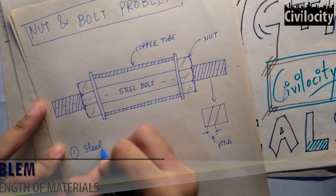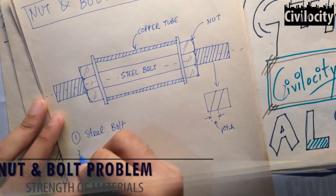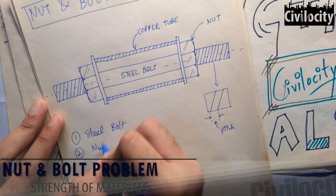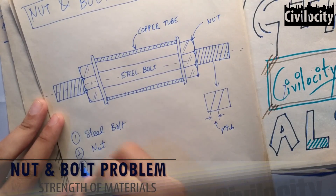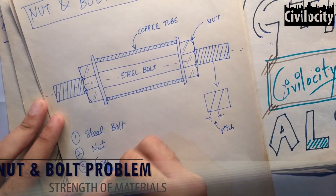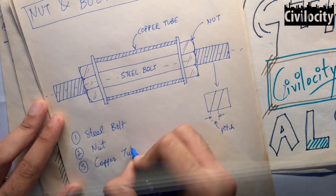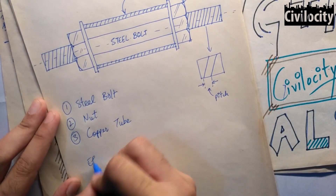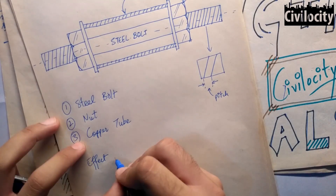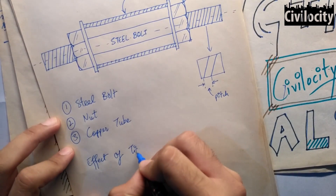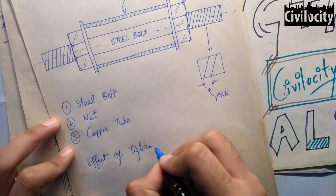In the nut and bolt problem, we have three things given: a steel bolt where threads are and the nut travels, and a copper tube which is around the nuts. When we tighten or loosen the nuts, the copper tube and steel bolt produce some stresses. So today we will talk about it.